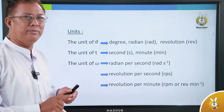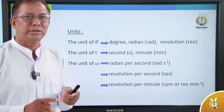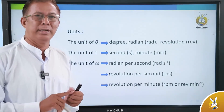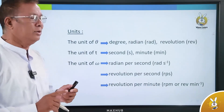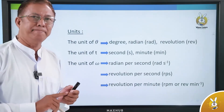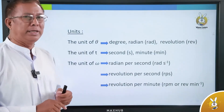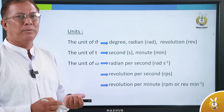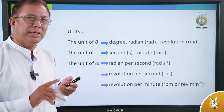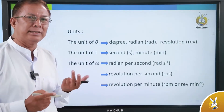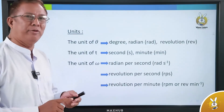The unit of theta is the second unit. The unit of omega — the angular velocity unit is the theta unit divided by the time unit.